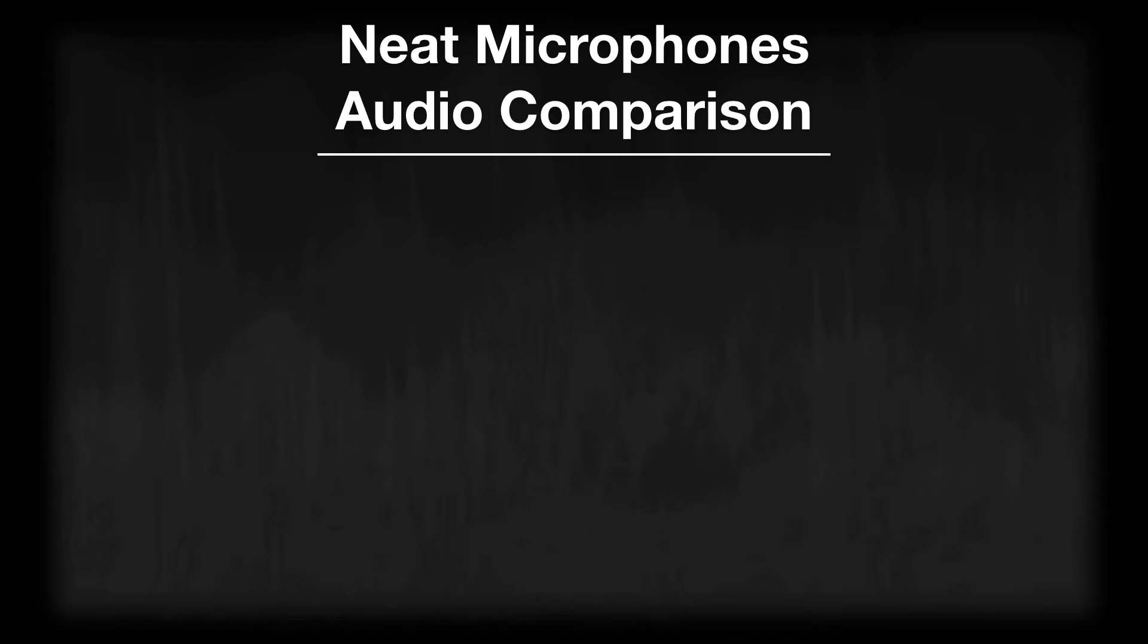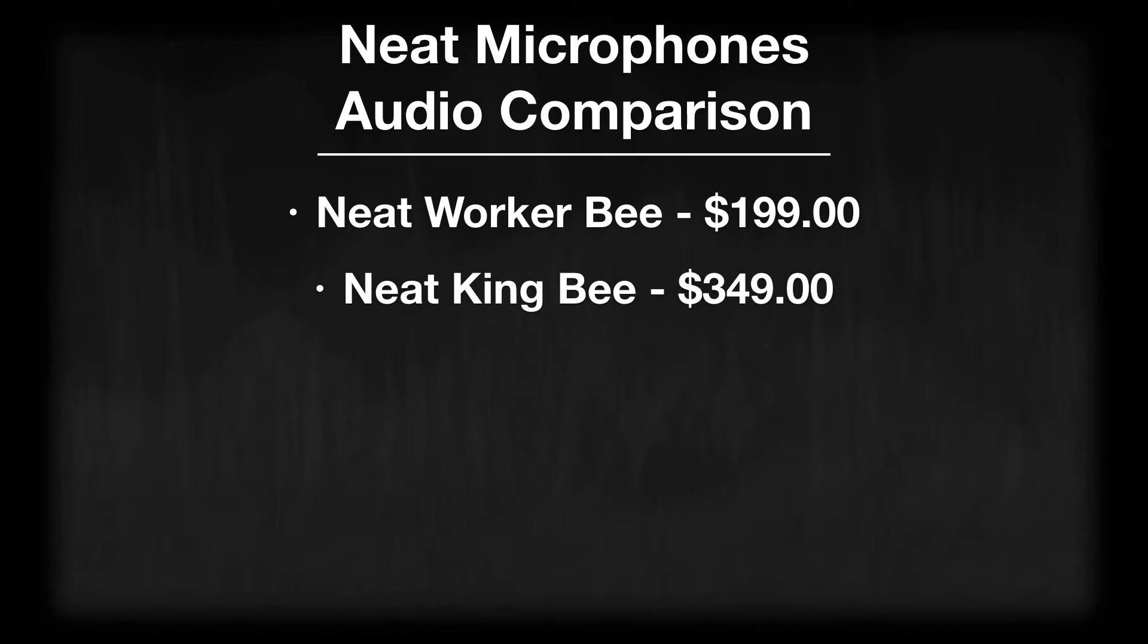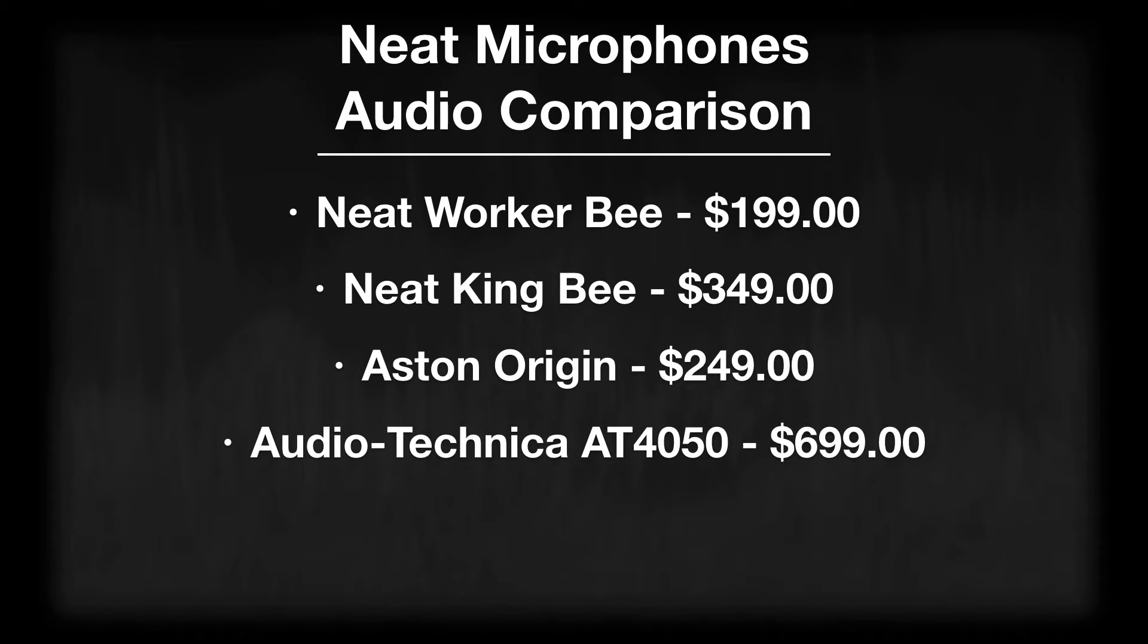So let's take a look at the microphones that were used in this audio comparison. First we have the Neat Worker Bee, which is $199. We also have the Neat King Bee at $349, the Aston Origin, which is $249, and finally the Audio-Technica AT4050, which is $699.